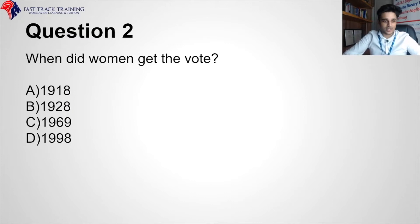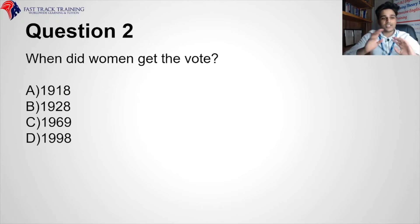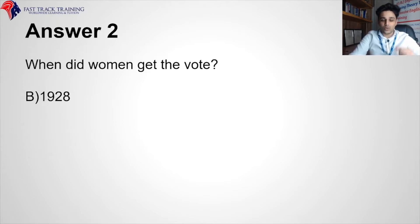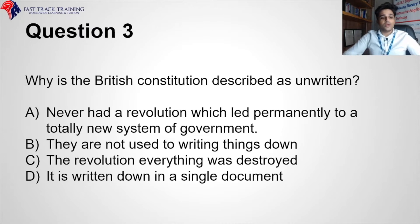The correct answer for when women got the vote is 1928 — well done to those who knew that. Question 3: Why is the British constitution described as unwritten? Options: they never had a revolution which led permanently to a totally new system of government; they are not used to writing things down; the revolution destroyed everything; or it is written down in a single document. The correct answer is A — they never had a revolution which led permanently to a new system of government.